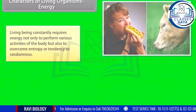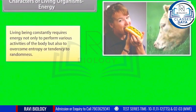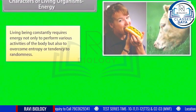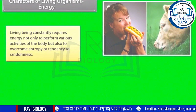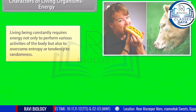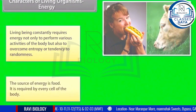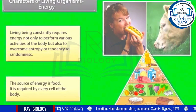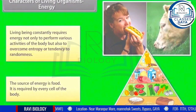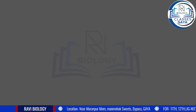Living beings constantly require energy — not only to perform various activities of the body, but also to overcome entropy, or the tendency of randomness. The source of energy is food, and it is required by every cell of the body.